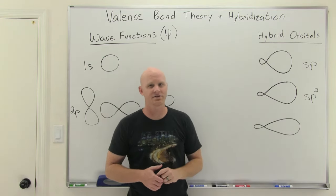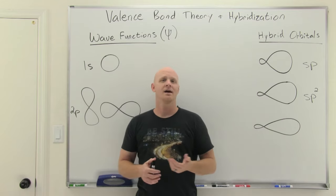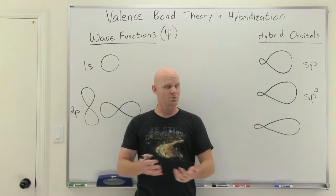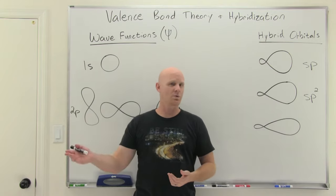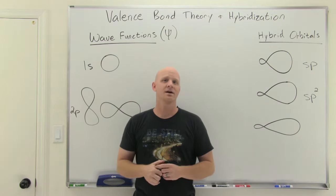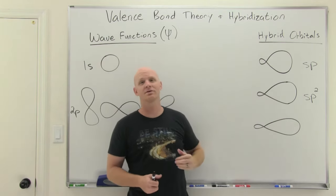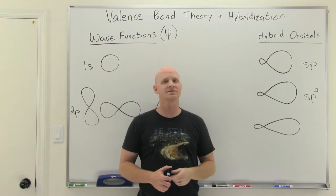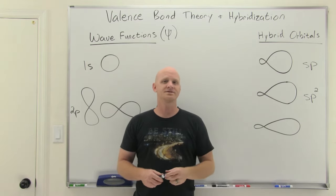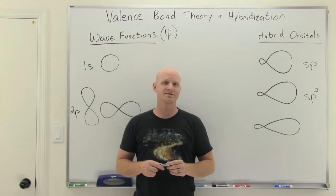Valence bond theory and hybridization is the topic of interest in this next lesson in my organic chemistry playlist. In this first chapter, just a review of general chemistry — we just did lessons on Lewis structures and formal charges. We'll now hit valence bond theory and hybridization, which will feed nicely into the next lesson on molecular orbital theory, and then we'll finish this chapter with lessons on polarity and intermolecular forces.